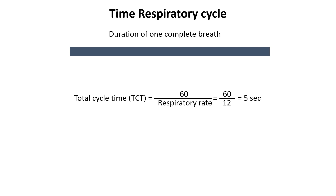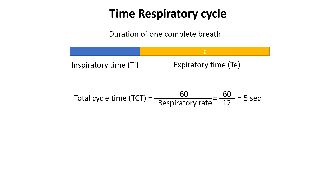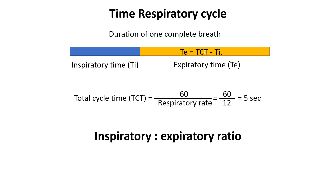This total cycle time is divided into inspiratory time and expiratory time. Inspiratory time is the duration of the inspiratory phase, and expiratory time is the time left for passive exhalation after inspiration. The ratio of inspiratory time to expiratory time is called the IE ratio and is commonly set at 1:2 or 1:3 to allow sufficient time for exhalation.